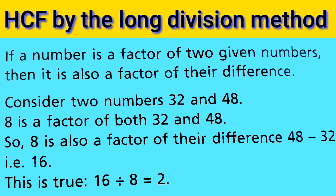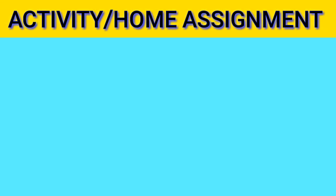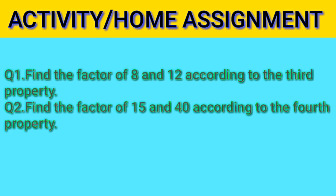Looking at the statement again: if a number — meaning 8 — is a factor of two given numbers — meaning 32 and 48 — and their difference is 16, then 8 is also a factor of 16. Now it is activity and home assignment time.